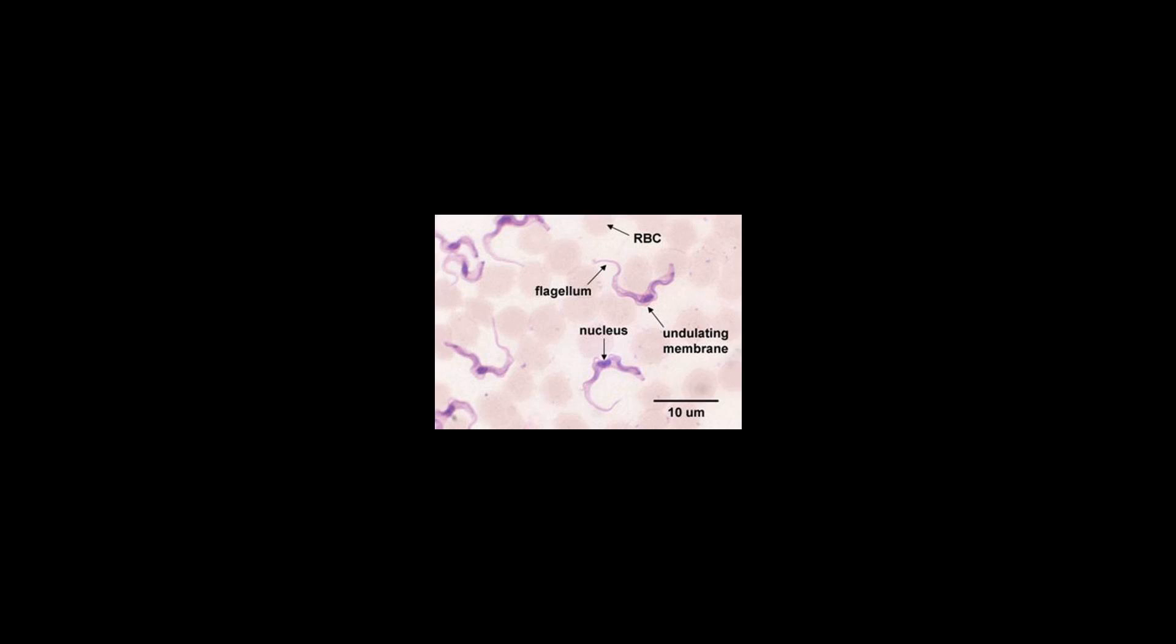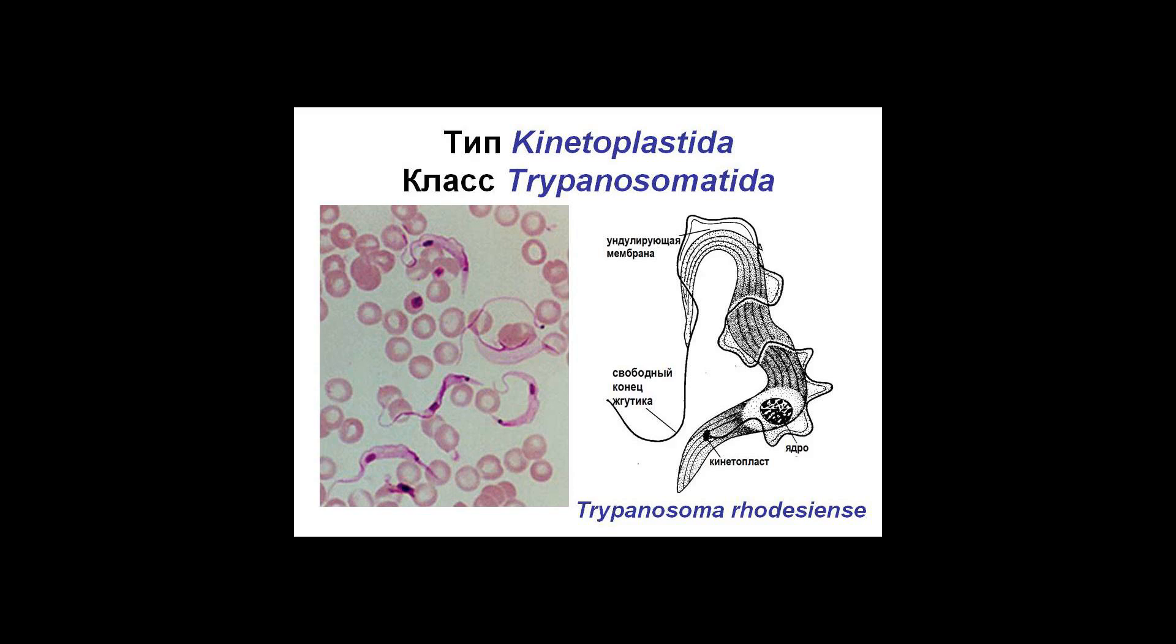Bodo is a typical genus within Kinetoplastida and includes various common free-living species which feed on bacteria. Others include Cryptobia and the parasitic Leishmania.